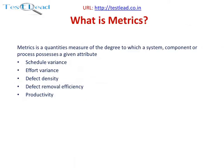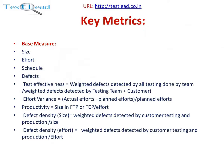What is a metric? A metric is a quantitative measure of the degree to which a system, component, or process possesses a given attribute. Key metrics include: schedule variance, effort variance, defect density, defect removal efficiency, and productivity. Base measures include size, effort, schedule, and defects. Test effectiveness equals weighted defects detected by all testing done by the team, divided by weighted defects detected by the testing team plus the customer.